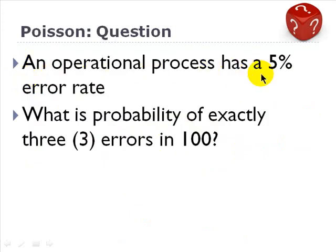Let's assume we have an operational process that has a 5% error rate. This could be, for example, if accounts receivable commits 5% errors on the invoices, some operational process. Could be anything.